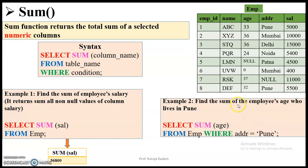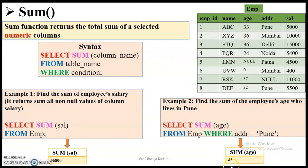The next example is to find the sum of the employee ages of those who live in Pune. There are two employees who live in Pune — record number one and employee number eight. Adding their ages: 33 plus 32 gives us 65. So the sum of the ages of employees whose address is Pune is 65.